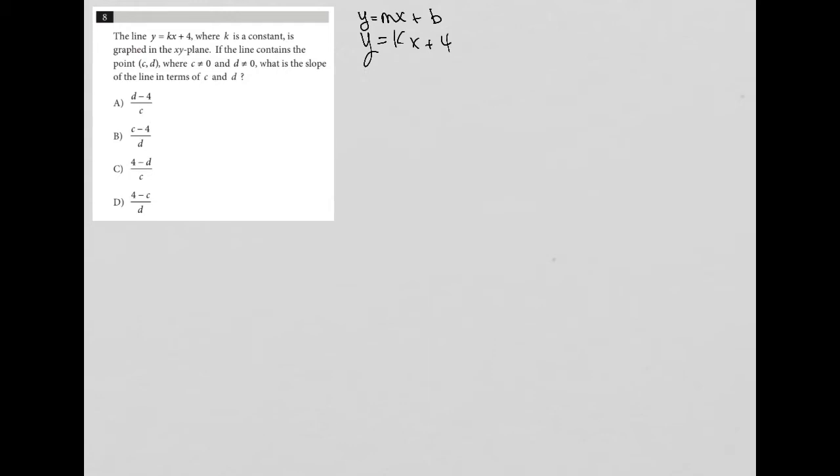So the line y equals kx plus 4, where k is a constant, is graphed in the xy plane. Anytime I read that, I just draw an xy plane. May or may not need it.